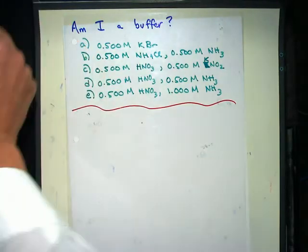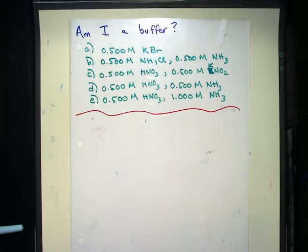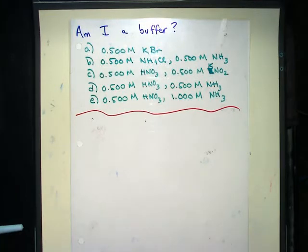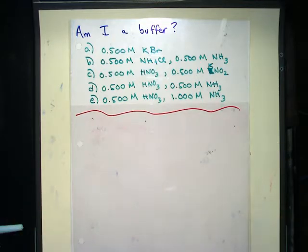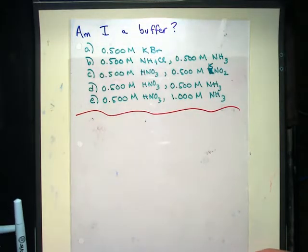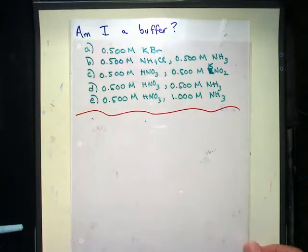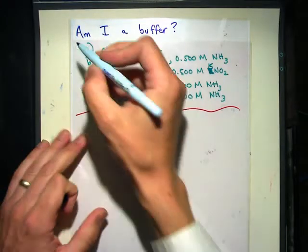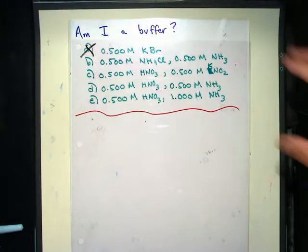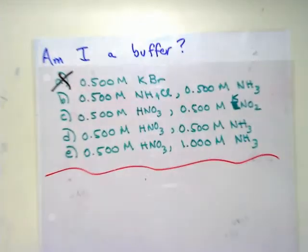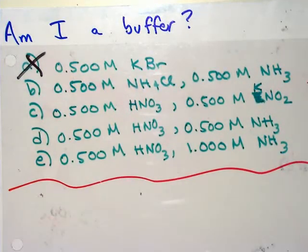Let's get started on this problem: Am I a buffer? We need to go through each of these and figure out what's a buffer. How about A? Is A a buffer? No, A would not be a buffer. You need a weak acid and its conjugate base. It would have one item. What would be the pH of A? It's neutral — they're both spectator ions, so it actually has a pH of 7. It would not be a good buffer.